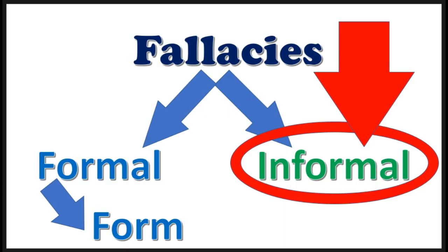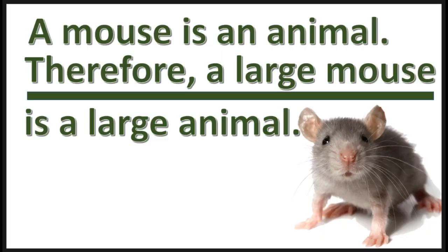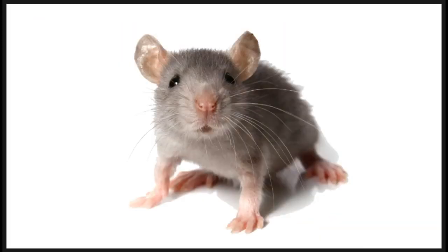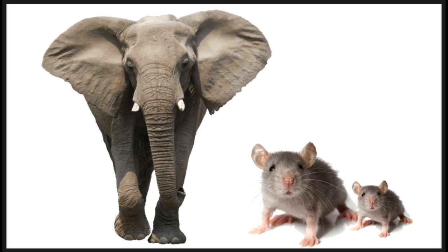Now an informal fallacy is different. It must be detected by examining the information in the argument. So here's an example. Notice you actually have to know information about mice in order to see the fallacy — even a large mouse is a small animal.